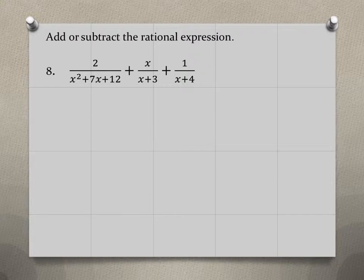So if we look, we have three different denominators. But the first denominator we need to factor to get a better look of what's actually going on. So if we factor this first denominator, it's actually going to be x plus 3 times x plus 4.